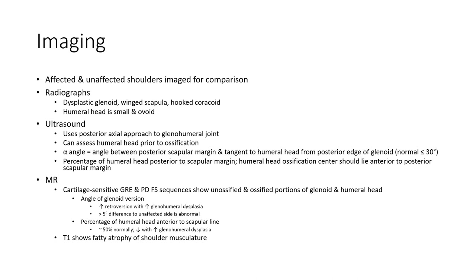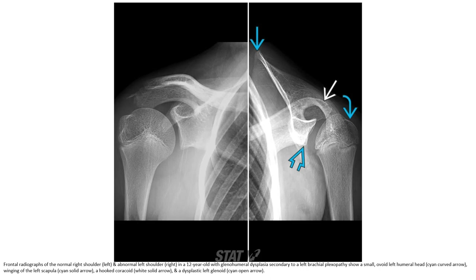Glenoid version angle: increased retroversion is associated with increased glenoid dysplasia. More than 5 degrees difference compared to the unaffected side is abnormal. Percentage of humeral head anterior to scapular margin is around 50% normally, and decreases with increased glenoid dysplasia. T1 sequences show surface atrophy of shoulder musculature.